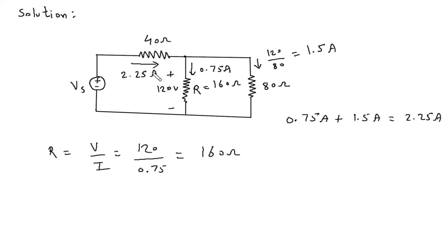Now we have the value of voltage. From this we can find the value of current. From this we can find the value of voltage across this 40 ohm. So the voltage across this 40 ohm will be I into R. So I into R is 2.25 into 40.